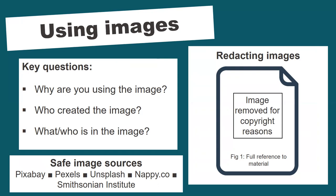If including the images is not possible, the main option open to you is redaction, where the image is removed and replaced with a statement such as 'image removed for copyright reasons.' As long as you include full attribution for any third-party images, readers will still be able to refer to the image if they need to. If you're just in need of an image to illustrate something, it's a good idea to look at some of the safe image sharing websites shown on the screen. These have an extensive selection of free-to-use images, but remember to check the individual licences applied to any image that you want to use.